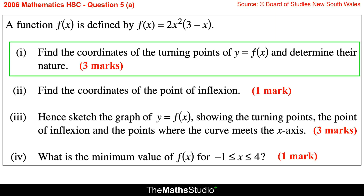Question 5, Part A. A function f(x) is defined by f(x) = 2x² × (3 − x). Part 1: Find the coordinates of the turning points of y = f(x) and determine their nature.